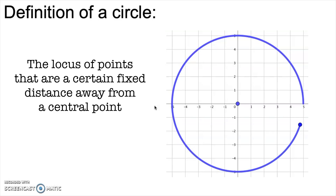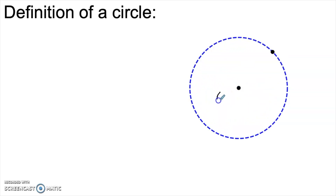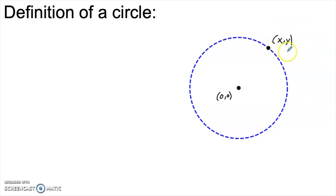Our goal today is to figure out how to write down the equation of that circle and then do some algebraic work with it. To figure out the equation, we're going to start with a circle centered at the origin. We need to describe all of the points on this circle — let's call those points x, y. x and y will be variables, so there will be infinitely many x's and y's that locate points on the circle.